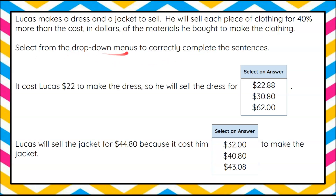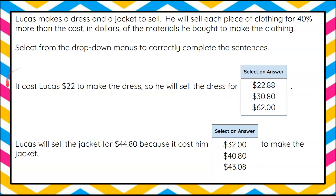We're going to select from the drop-down menus to correctly complete the sentences. This has two parts. The first part: it cost Lucas $22 to make the dress, so he will sell the dress for — and we're given three answer choices in our drop-down menu. Before we look at the second part, pause the video here and determine the cost he was selling the dress for versus the cost to make the dress.